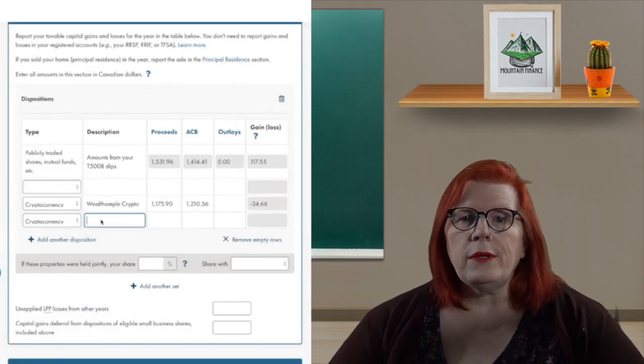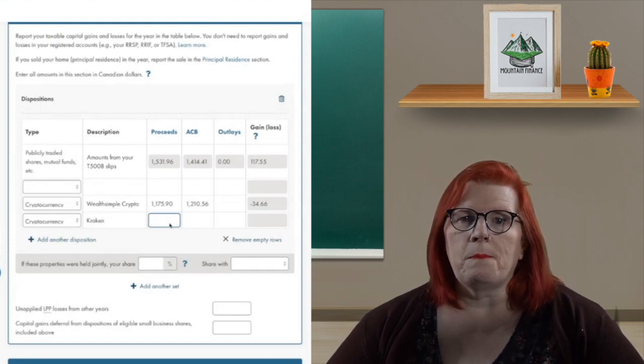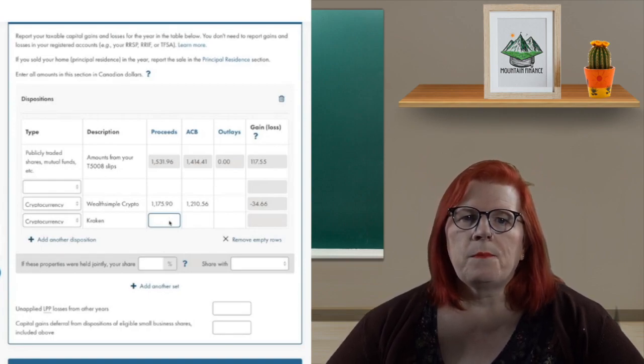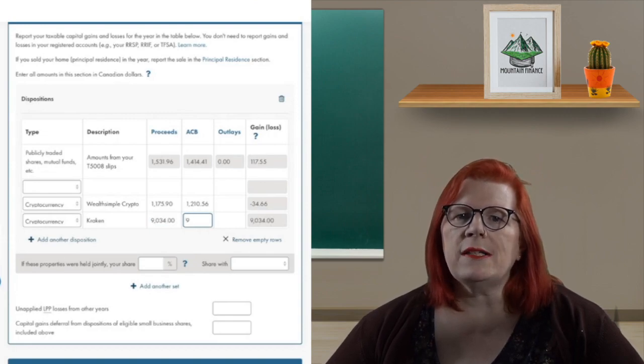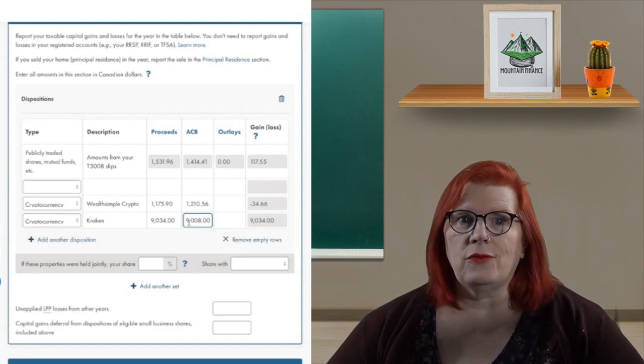If you scroll down further on the Wealthsimple page, you can see all the forms attached. You want the Capital Gains or Losses Form. From this form, you can enter in your main crypto information. For my Kraken, I had cashed in $9,034 from an adjusted cost base of $9,008 for a capital gain of $26.